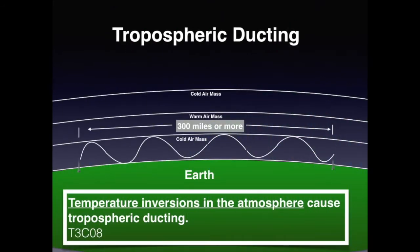Atmospheric ducting is caused by a thermal inversion. This occurs when a warm air mass is trapped between two cold air masses. Thermal inversions typically create fog. The duct that is created can facilitate VHF and UHF signals to travel 300 miles or more. For the exam, understand that temperature inversions in the atmosphere cause tropospheric ducting.